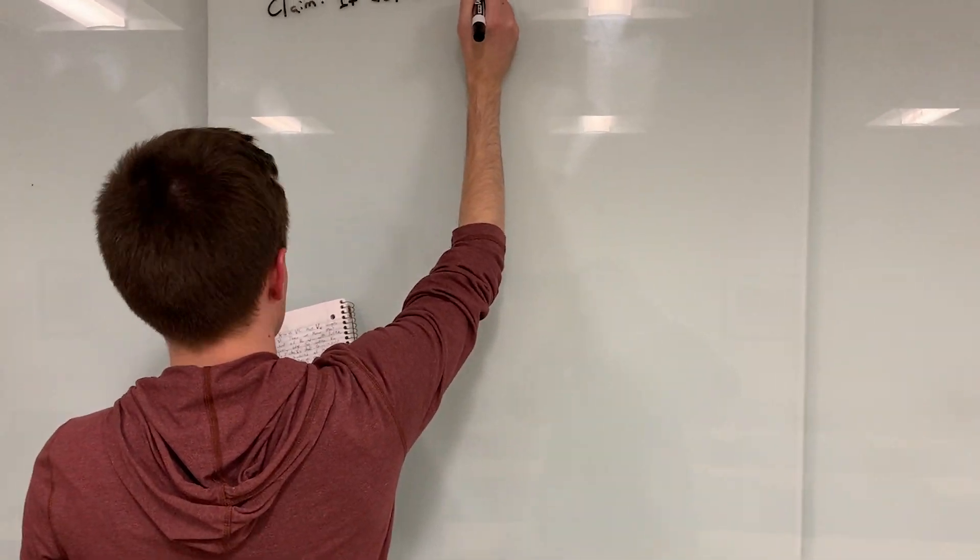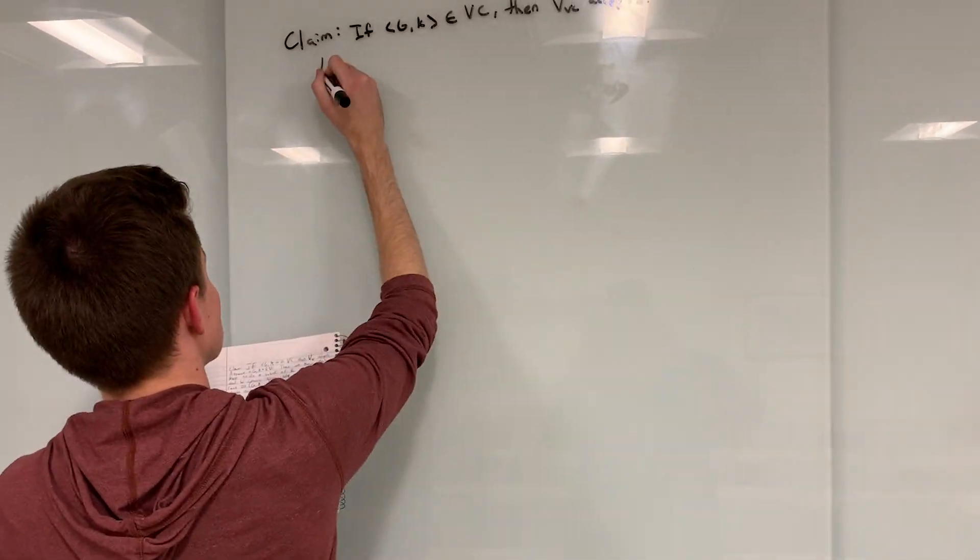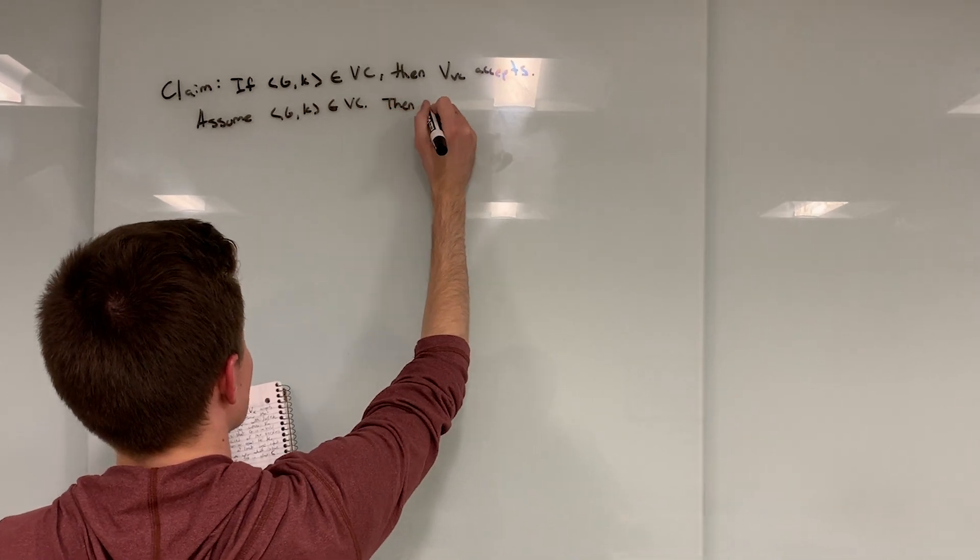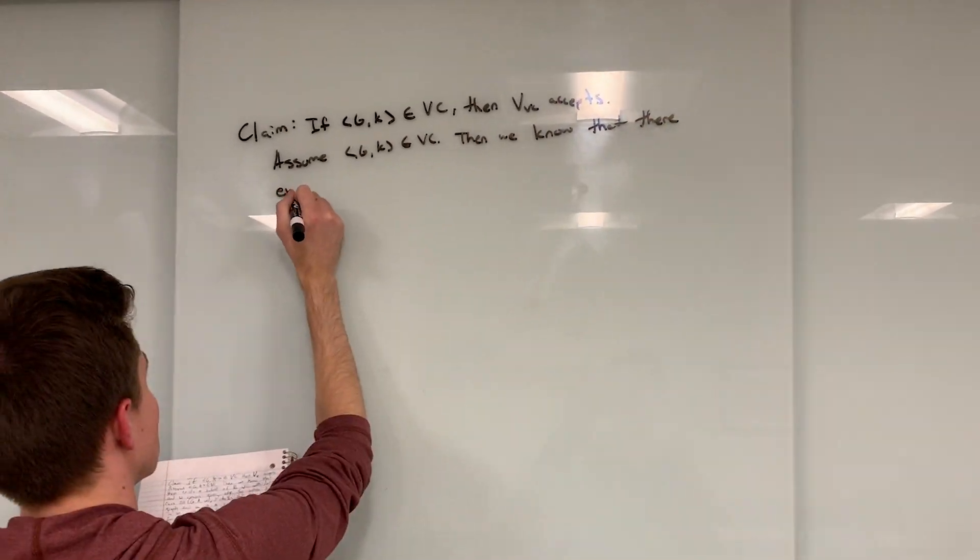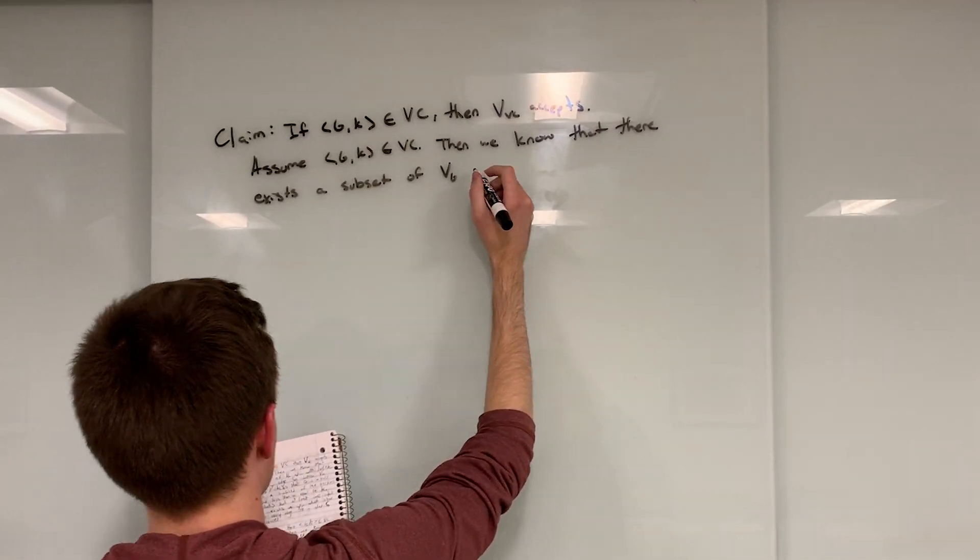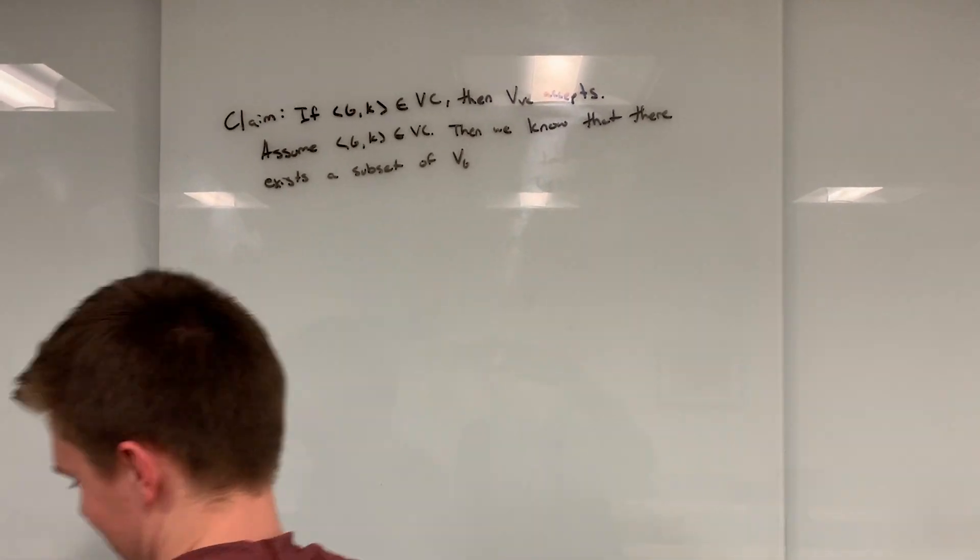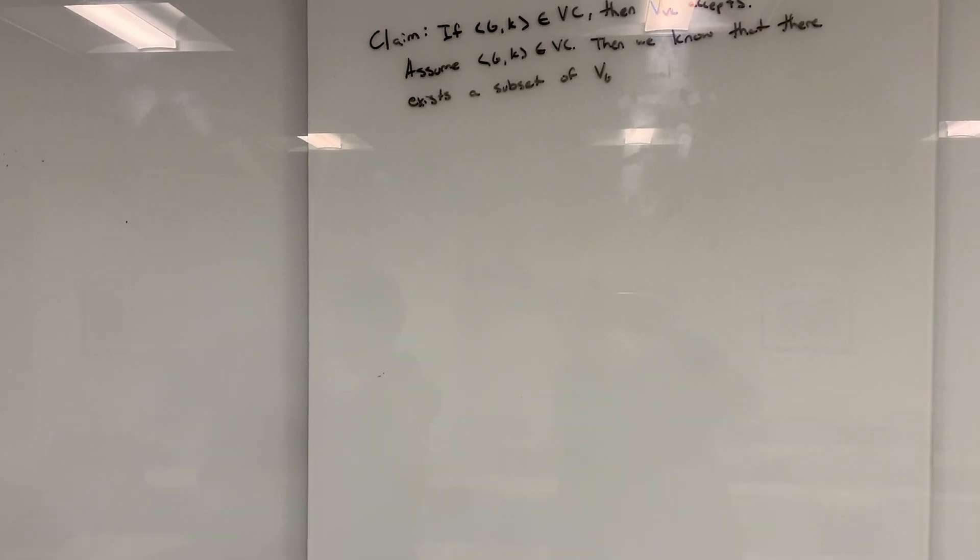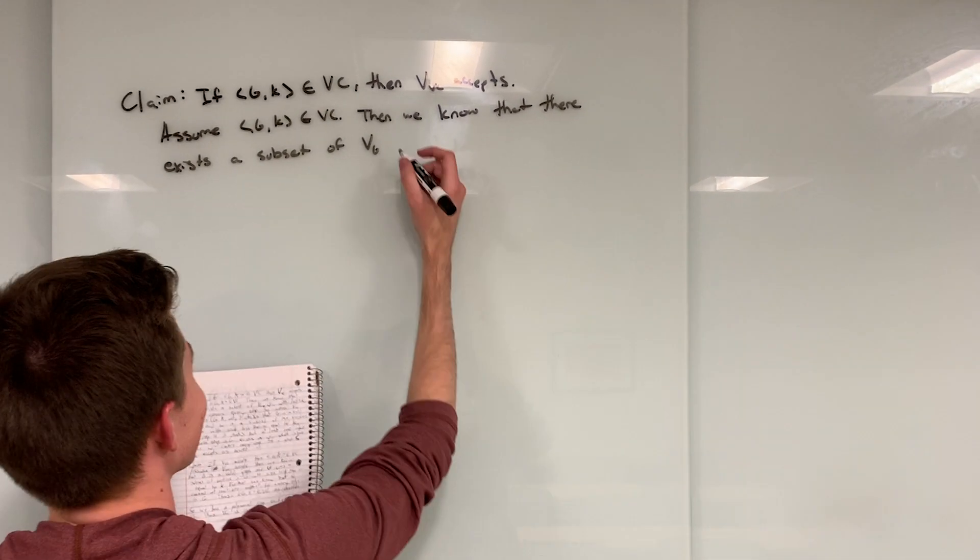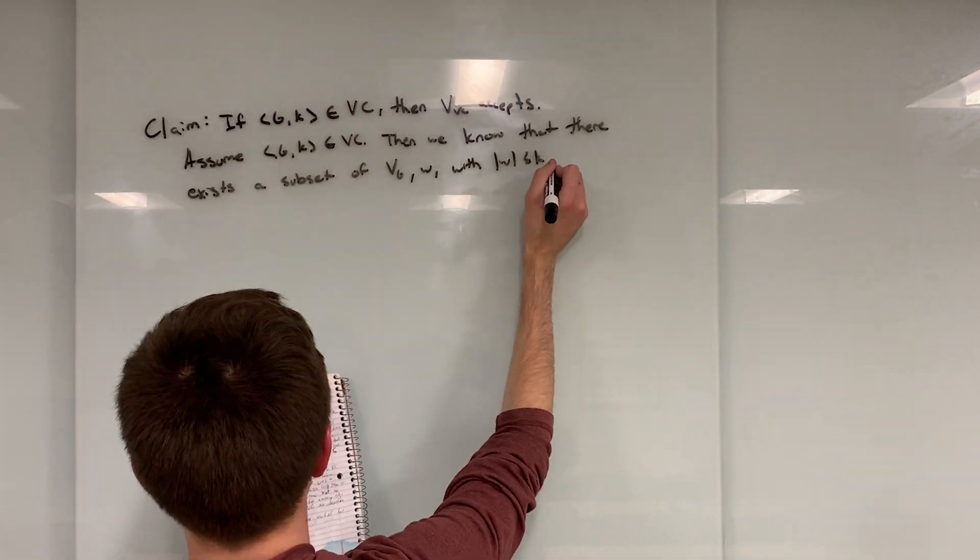We shall now prove that if G, K are in vertex cover, then the verifier we built accepts. If G, K are in vertex cover, then we know there exists a complete covering of every edge in G, and the covering size, or vertex size, is less than or equal to K.